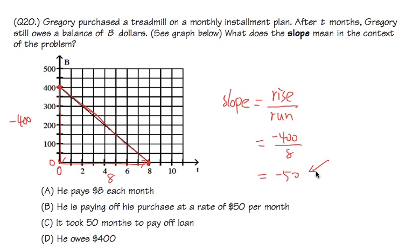So the slope right here, negative 50, this means he must be paying off $50 per month.